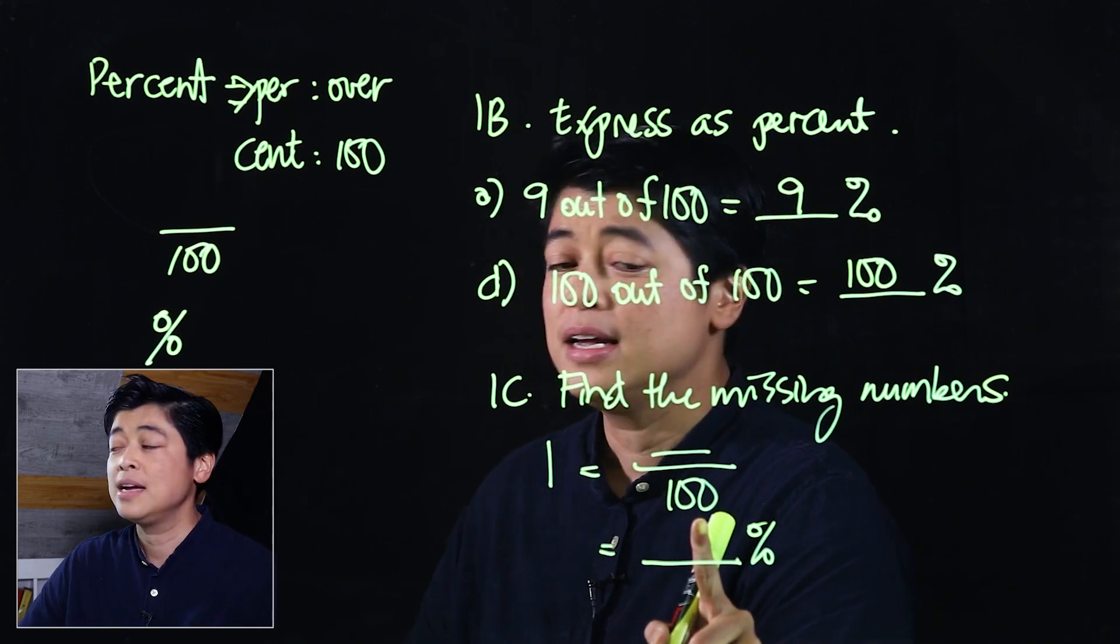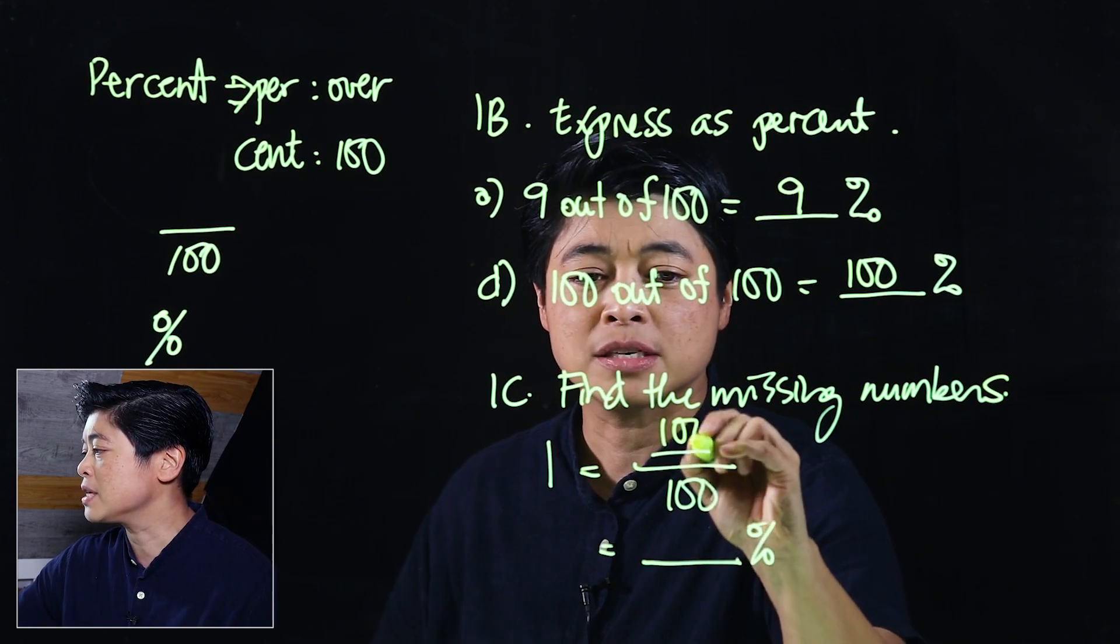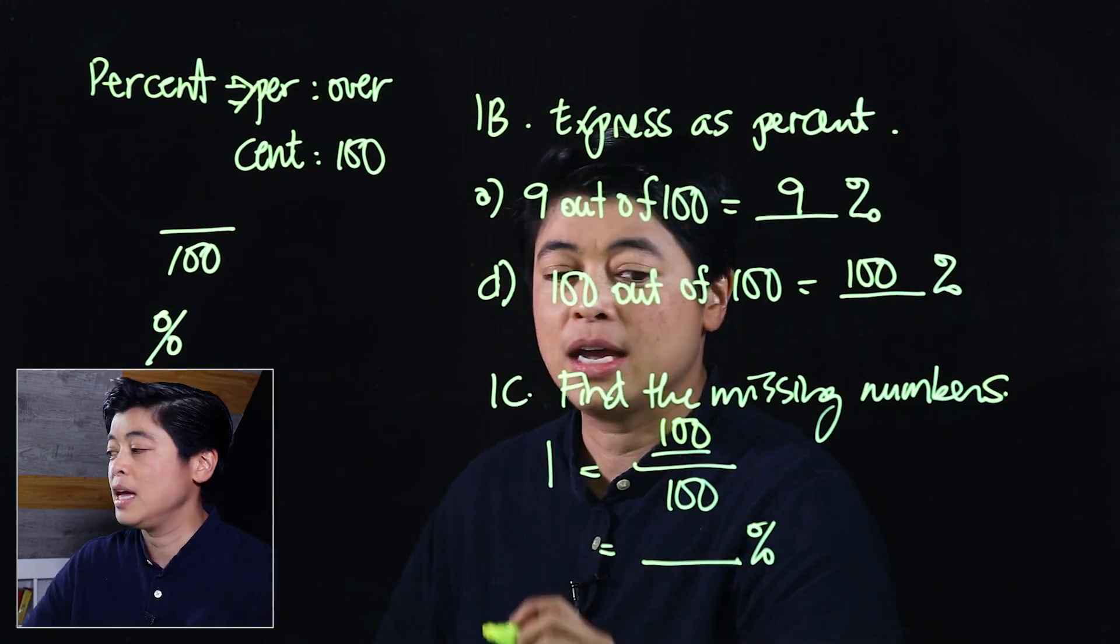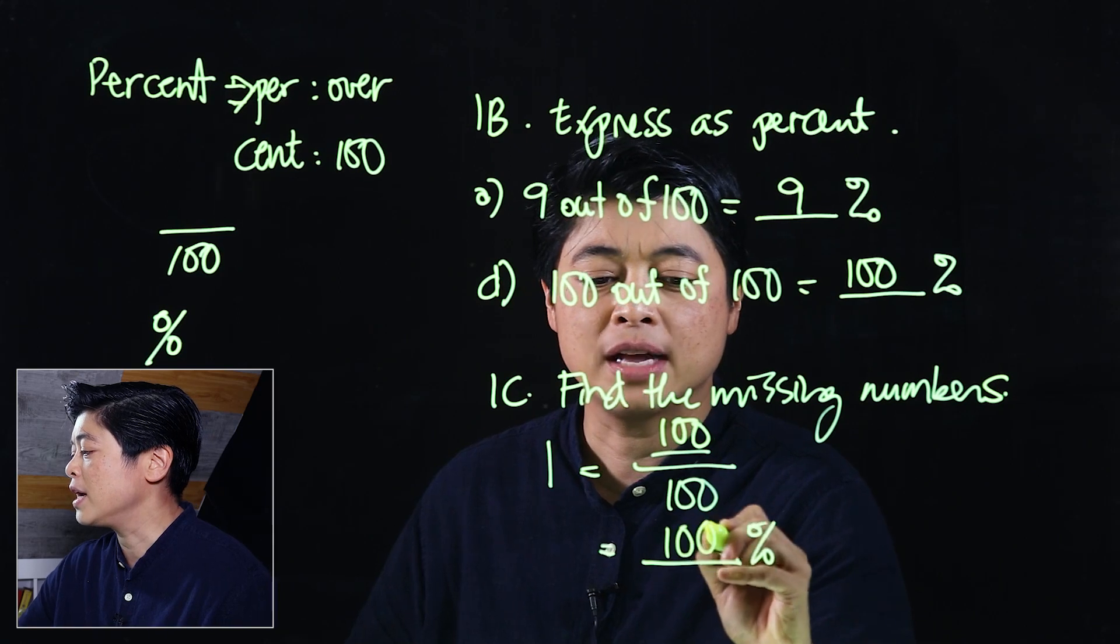Making one equivalent to 100%. That concludes lesson one of chapter 10. See you in the next lesson.